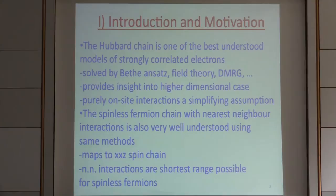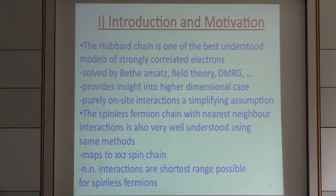In some sense, the models get progressively simpler. We could start with the so-called Hubbard chain model — a chain of fermions with on-site Coulomb interactions. Fermions have spin and on-site Coulomb interactions. This model has been studied extensively by Bethe Ansatz, field theory, and a numerical technique called Density Matrix Renormalization Group. It's been quite useful to understand higher dimensional models, though it contains purely on-site Coulomb interactions, which is a big approximation.